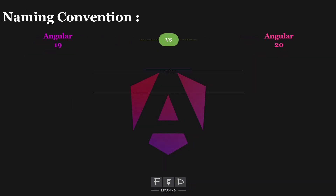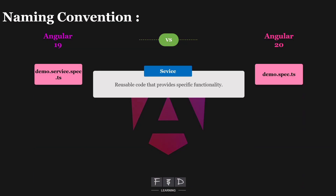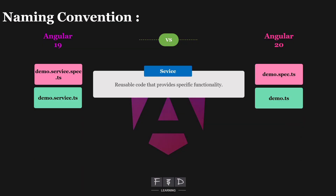First, let's talk about services. If we create a new service called demo in Angular 20, we will get two files without the service prefix: demo.spec.ts and demo.ts. This means demo.service.spec.ts becomes demo.spec.ts and demo.service.ts becomes demo.ts, dropping the service part from the original file names.